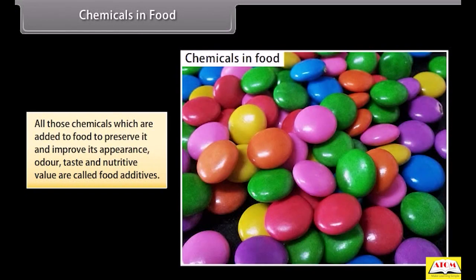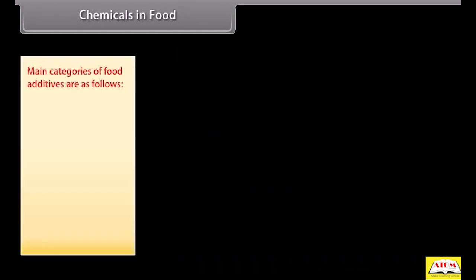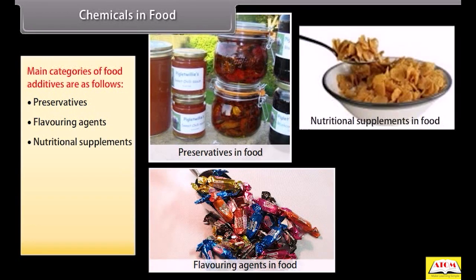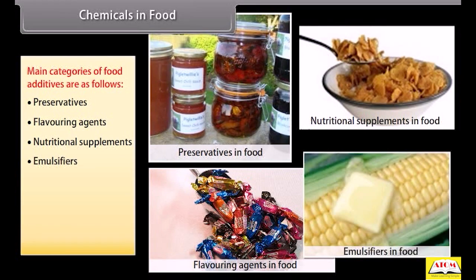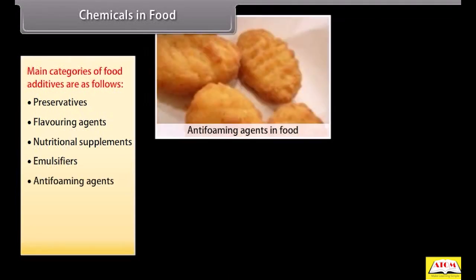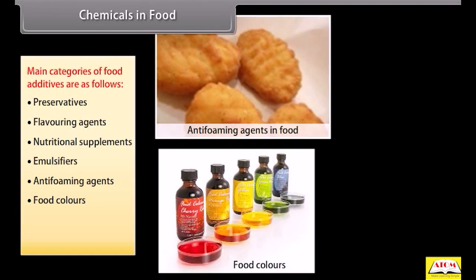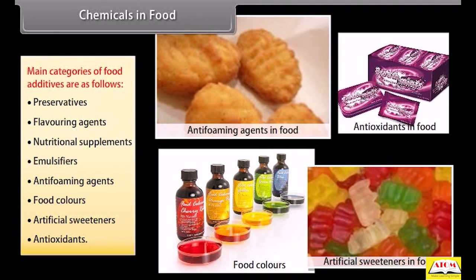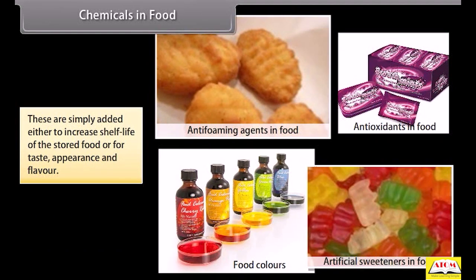Chemicals in food: all chemicals added to food to preserve it and improve its appearance, odour, taste and nutritive value are called food additives. Main categories include: preservatives, flavouring agents, nutritional supplements, emulsifiers, anti-foaming agents, food colours, artificial sweeteners and antioxidants. These are added either to increase shelf life of stored food or for taste, appearance and flavour.